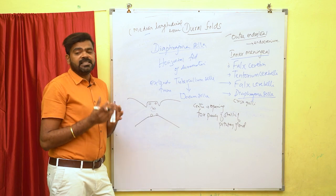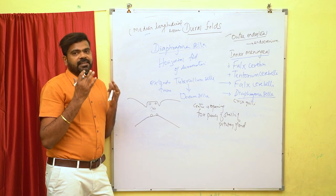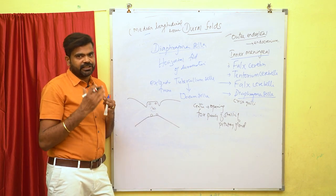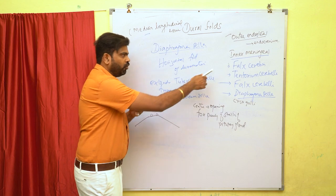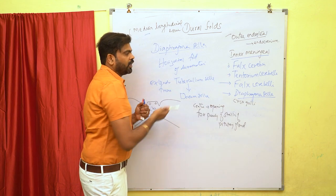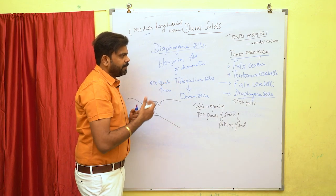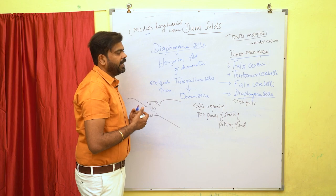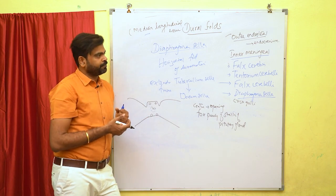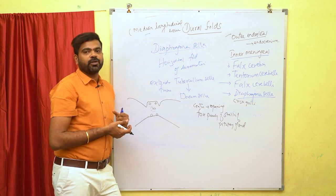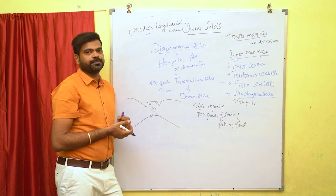So the meningeal layer divides the cranial cavity into different compartments by means of four folds: falx cerebri, tentorium cerebelli, falx cerebelli, and diaphragma sellae. This is about the dural folds. Thank you.